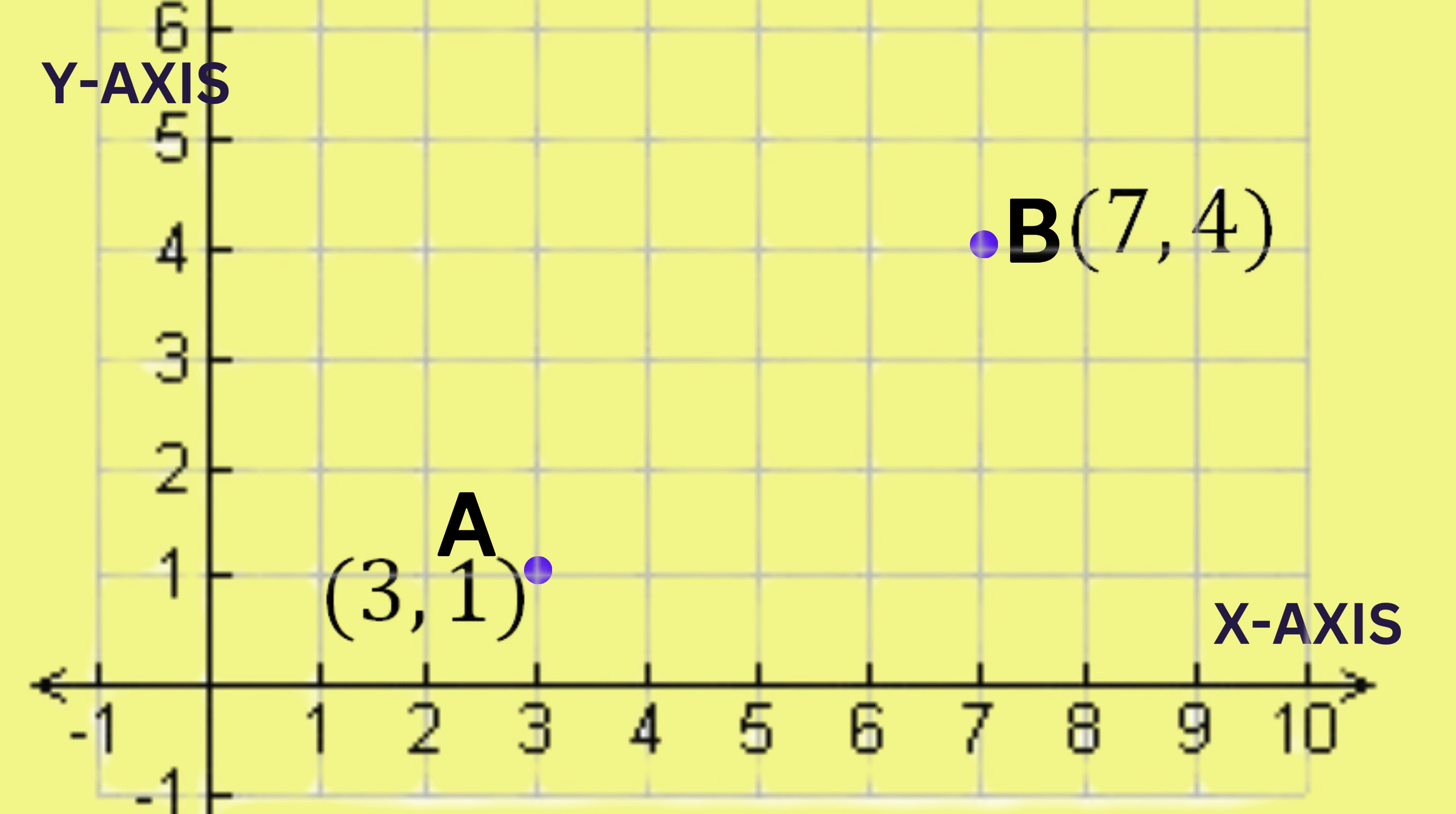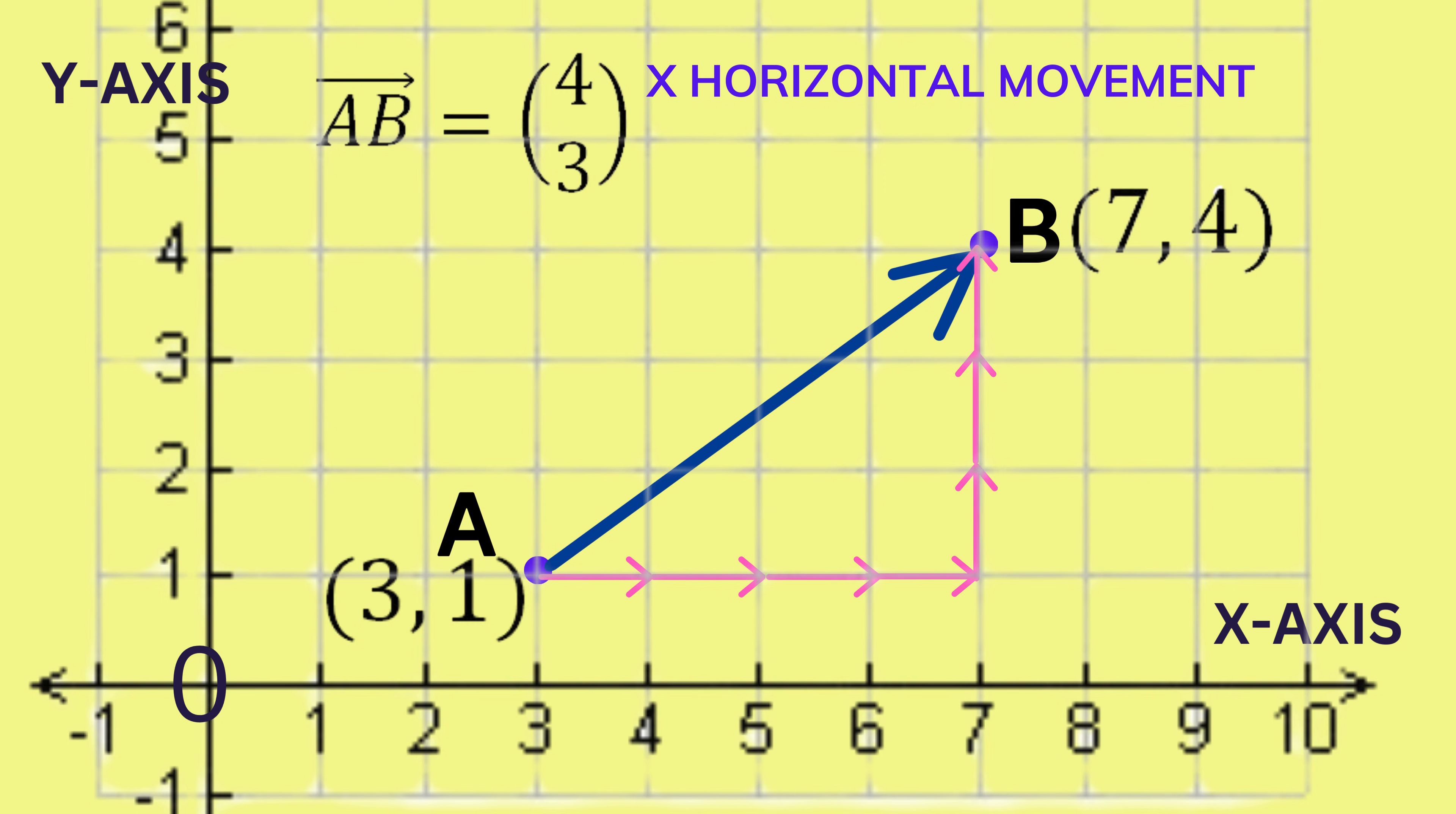Suppose we want the vector that will take us from point A to point B. We will need to determine how many units to move horizontally and how many units to move vertically. In this case, the vector goes 4 units horizontally to the right, represented by positive 4, and then 3 units vertically up, represented by positive 3. The vector is represented as a single column matrix, with the horizontal movement represented on top, while the vertical movement is represented below.